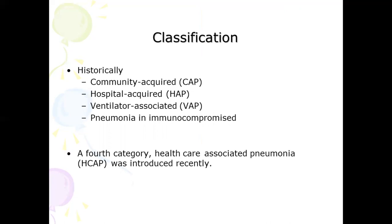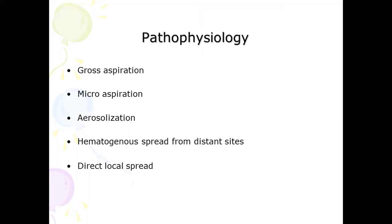Moving on to the classification of pneumonia: historically, pneumonia is divided into four types — community-acquired pneumonia, hospital-acquired pneumonia, ventilator-associated pneumonia, and pneumonia in the immunocompromised patient. However, recently a new category has been introduced: healthcare-associated pneumonia.